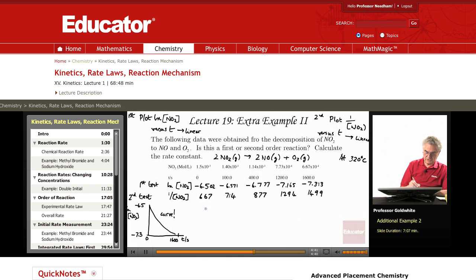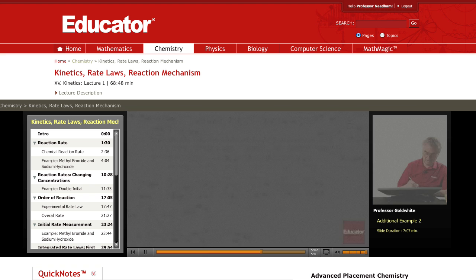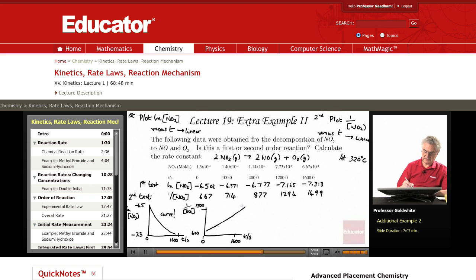Now let's do the 1 over plot. Same time scale, 0 to 1600. Quite a different set of numbers now from 600. This is, remember, 1 over NO2, a nice linear plot.